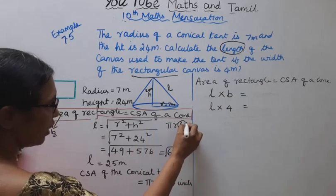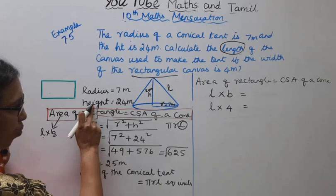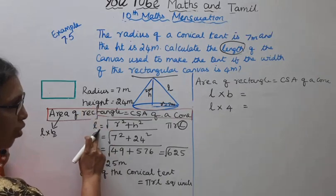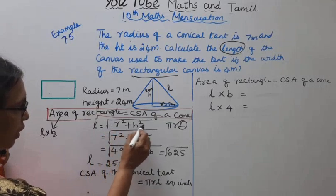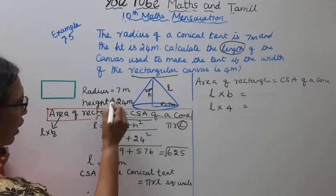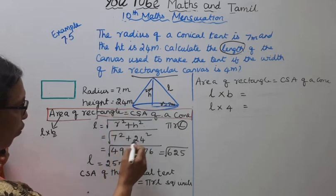What is L? L is the slant height. We know the radius. The formula for L is: L = √(R² + H²). R is 7, so 7² plus height 24².